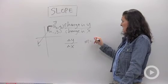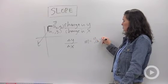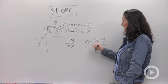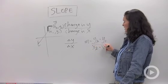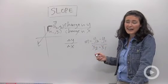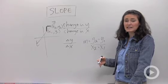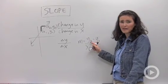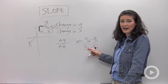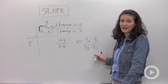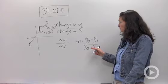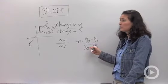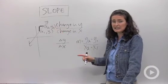And the way I would write that is y2 take away y1 on top of x2 take away x1. Again, this is the same thing just written in a different way. I'm finding out how much did my y values change and putting that on top of how much did my x values change in a fraction. So this formula is really important any time you have two points like this.